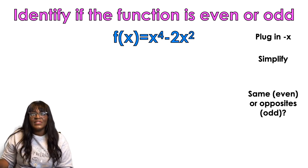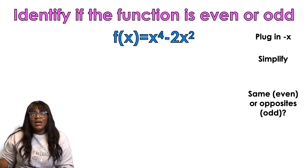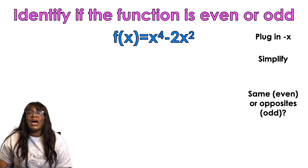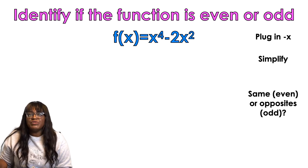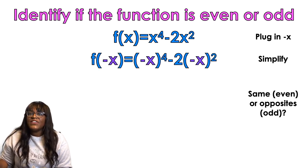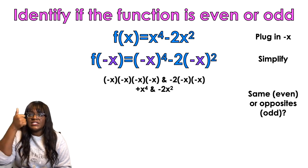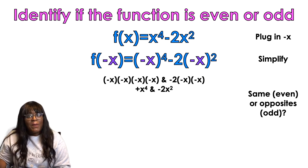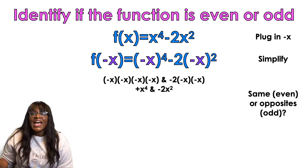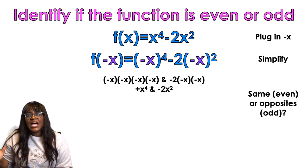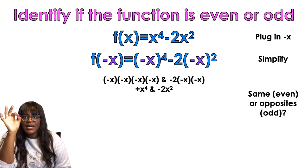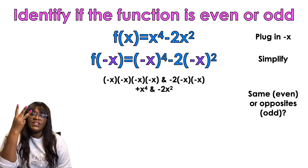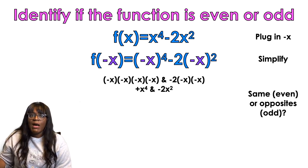The next example, I'm going to do the same exact thing. I'm going to plug in negative x into my function. So negative x to the fourth power. That's negative times a negative times a negative times a negative. What's that going to turn out to be? Well, it's going to turn out to be positive, of course. And then we're going to do negative 2 times negative x times negative x, because negative x is going to be squared. So that's three negatives.